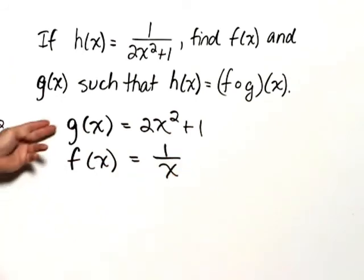This is not the only answer. It is simply one of many answers that would give us h of x equals 1 over 2x squared plus 1.